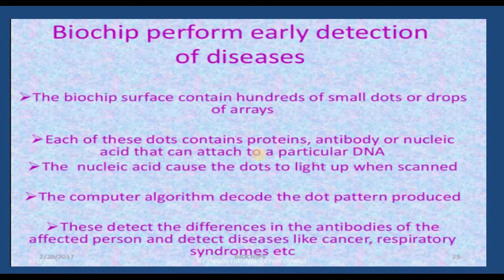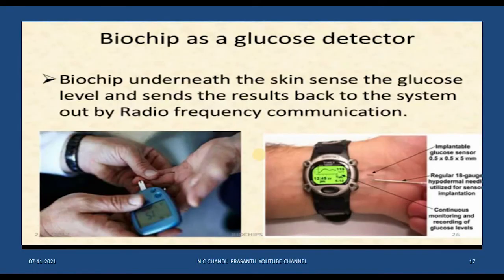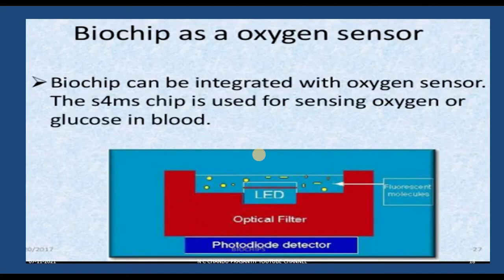Biochip performs early detection of diseases. It also acts as a glucose detector, monitoring glucose levels in the body — the biochip underneath the skin sends the glucose level results back via radio frequency communication. During COVID, it was required to monitor oxygen levels frequently, and a biochip integrated with an oxygen sensor can automatically monitor oxygen levels.